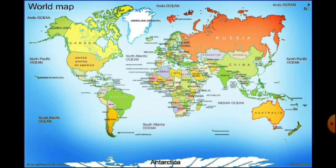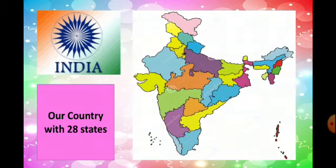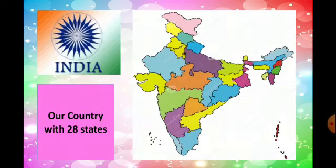Australia is the smallest continent in size — I want all the children to remember this, as I am going to ask again in the next class. Each continent is divided into different countries, and our country India is in the Asian continent. India is again divided into 28 states and capitals, which you have already learned.